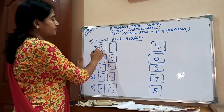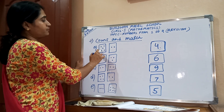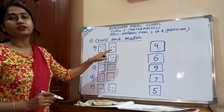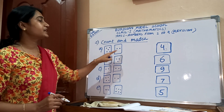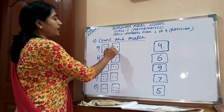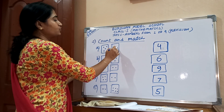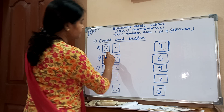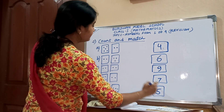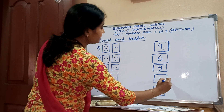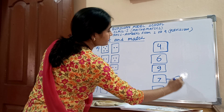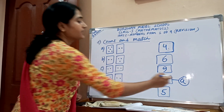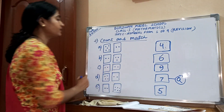Number A: count the dots — one, two, three, four, five, six, seven. Total dots: seven. Five and two make seven. So match number A with 7. This is the number matching — in this way you all will match.